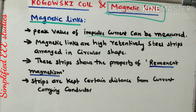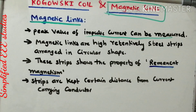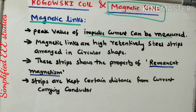In this session we have discussed the Rogowski coil — a toroid-shaped coil operating on Faraday's laws of electromagnetic induction. With an integrator, its output voltage is directly proportional to the current passing through the conductor. We also discussed magnetic links, which work on the principle of remanent magnetism to measure the peak value of impulse current. Thank you very much for watching. If you found this channel useful, please subscribe.